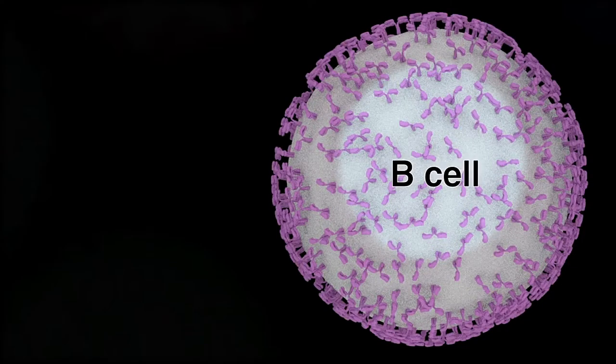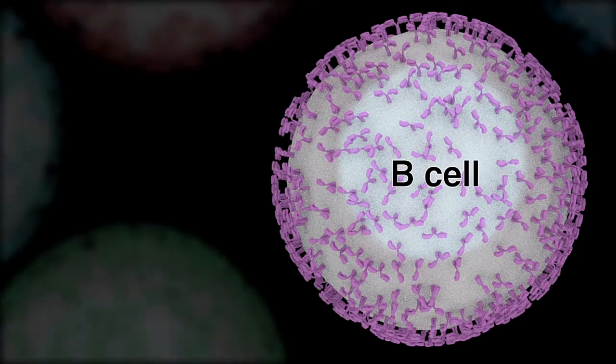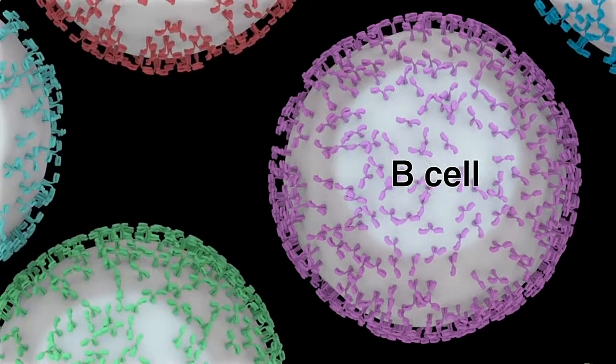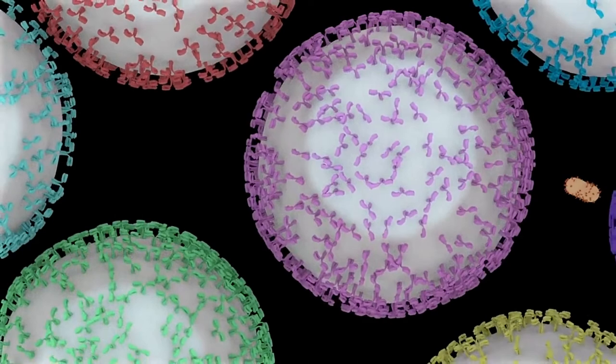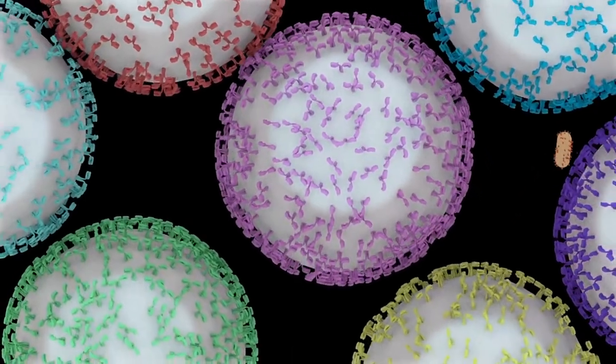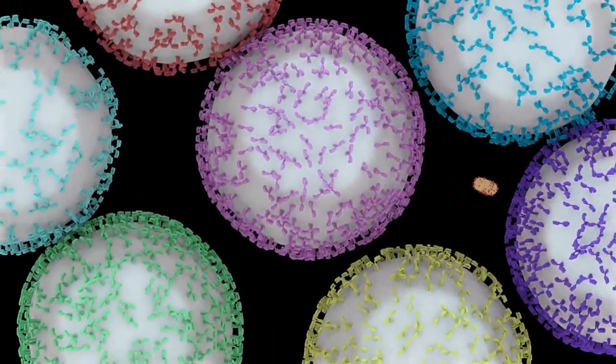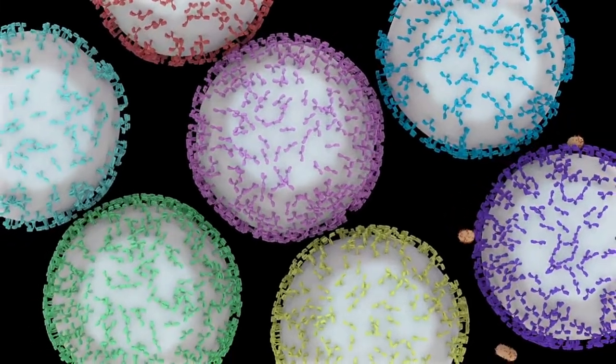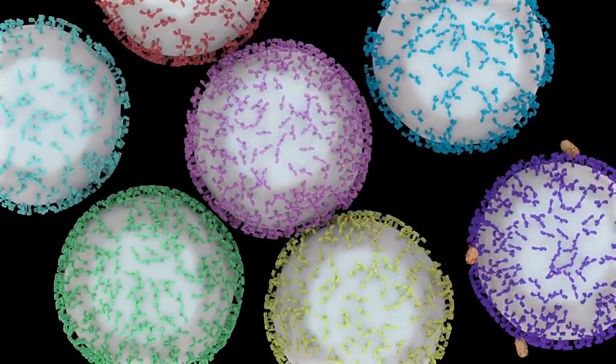Antibodies are produced by specialized cells within the immune system called B lymphocytes or B cells. The immune system recognizes a wide array of antigens by producing millions of different types of antibodies, each recognizing a different antigen, with each B cell producing only one particular antibody.